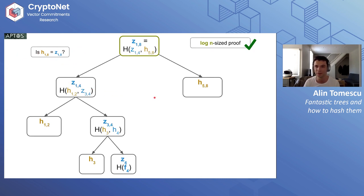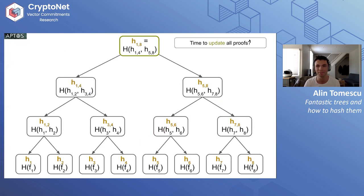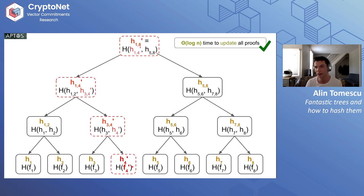The time to update all proofs is also efficient in Merkle trees. If H4 changes, I only need to update the path from H4 to the root — just logarithmic work. This is why Merkle trees can be better than constant-size VCs: maintaining proofs requires only logarithmic work, not linear.